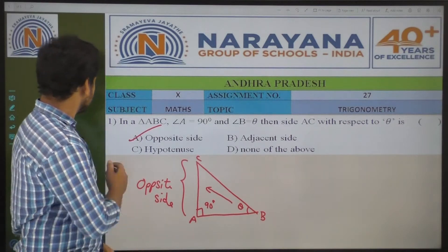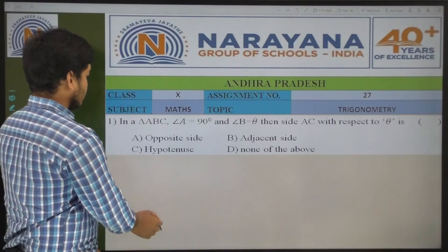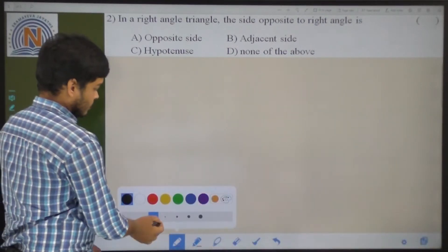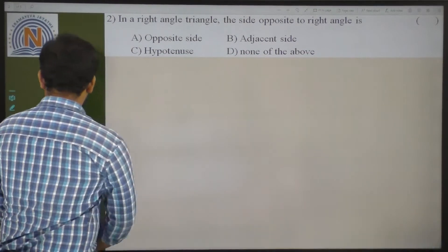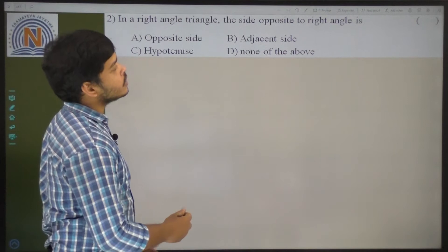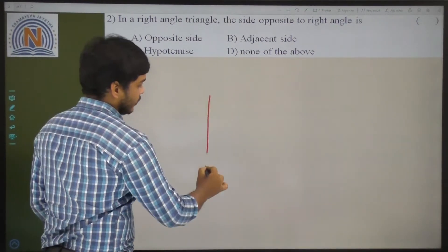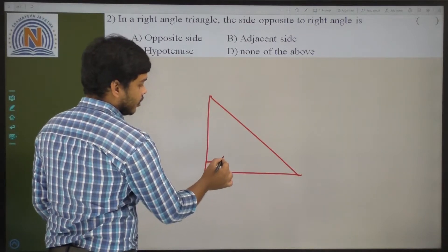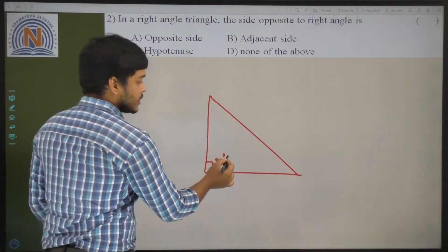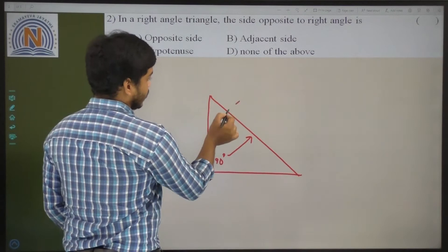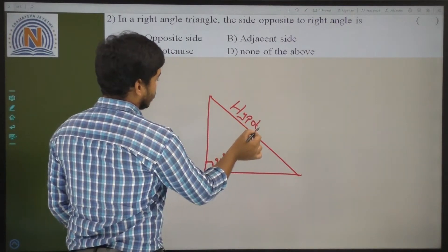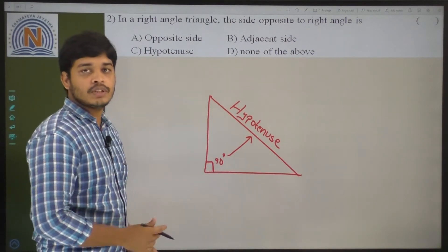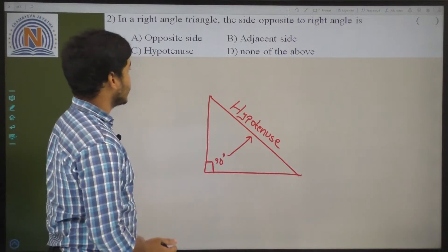Coming to the next problem. In a right angle triangle, the side opposite to the right angle is? If you draw a right angle triangle, this is 90 degrees, and the side which is opposite to the 90 degrees is called the hypotenuse. So the option is C.